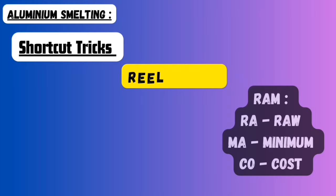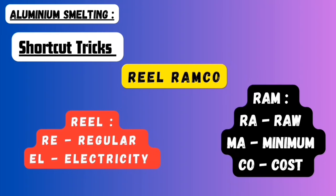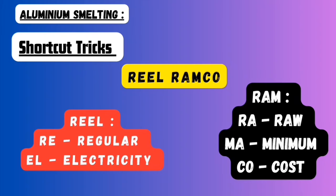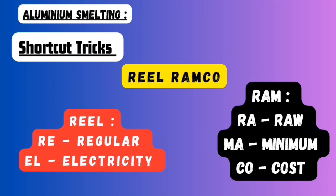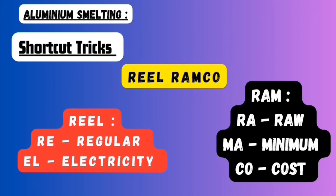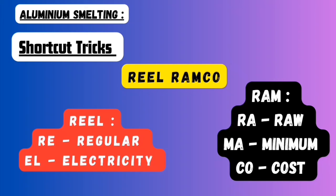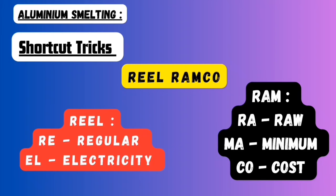Now let's discuss the prime factors for the location of aluminium smelting industries. To remember these points, remember the sentence: REAL RAMCO. RE stands for regular, EL stands for electricity. RAM: RA stands for raw, MA stands for minimum, CO stands for cost. So the two prime factors are: regular supply of electricity, and raw materials at minimum cost.